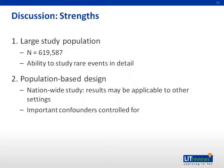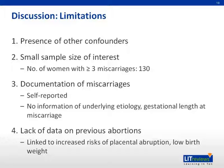Also, important confounders were controlled for. However, some confounders were not controlled for, such as the existence of thrombophilia and polycystic ovarian syndrome. After statistical analysis, some sample sizes of interest were quite small. The documentation of miscarriages was also a problem, as it was self-reported, so there is no information on the underlying etiology or the gestational length at the time of miscarriage. There was also a lack of data on previous abortions, which is significant because recent studies have linked increased risk of placental abruption and low birth weight to previous abortions.